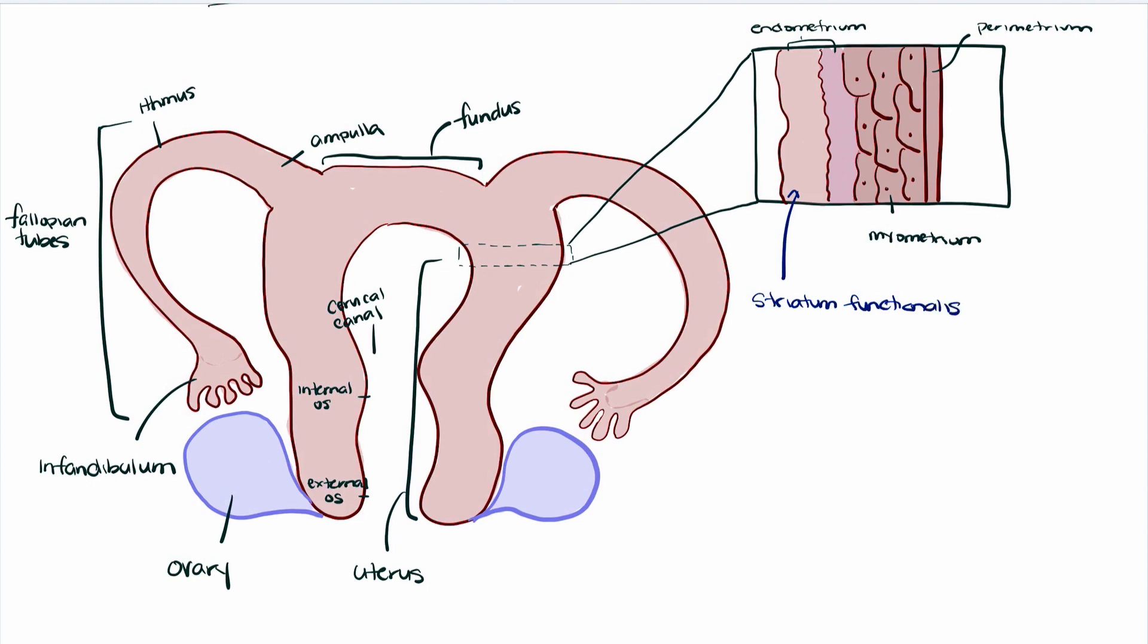And then we have the stratum basalis, which is the innermost layer of the endometrium which remains constant. It is not sloughed off and it continues to reside within the endometrium during menstruation. So the stratum functionalis is removed and regrows during menstruation.